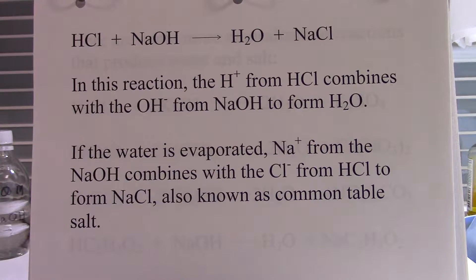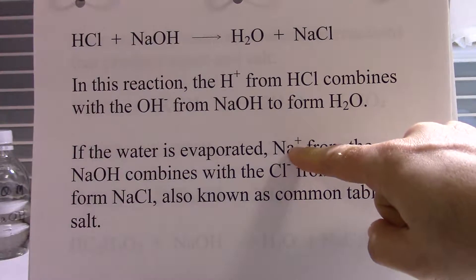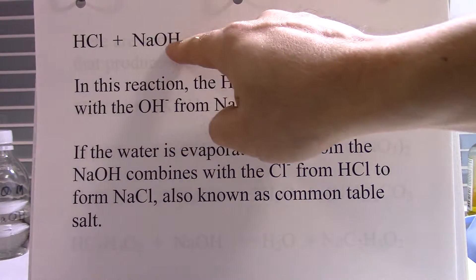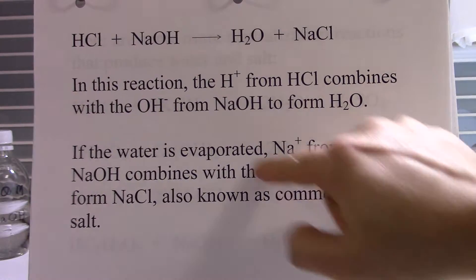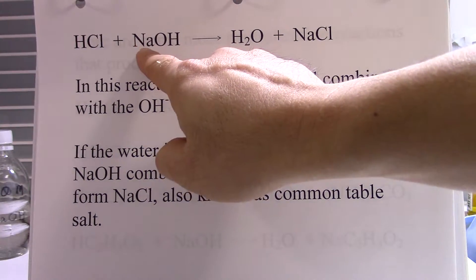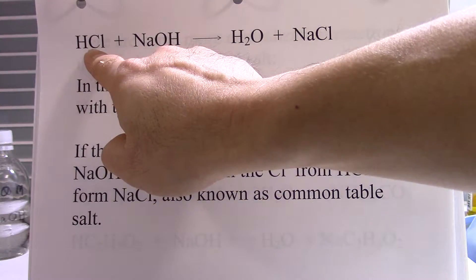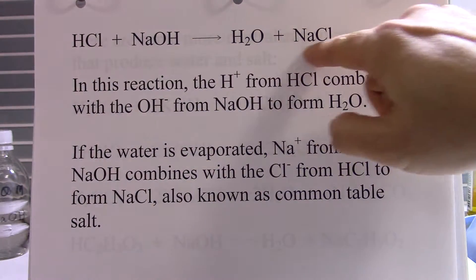If the water is evaporated, the sodium ion from sodium hydroxide combines with the chloride from hydrochloric acid to form NaCl, also known as common table salt. So Na+ is the positive ion of the base combining with chloride, which is the negative ion of the acid. When the positive ion of the base combines with the negative ion of the acid, you get something called a salt.